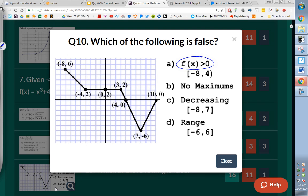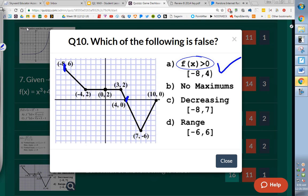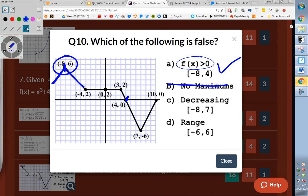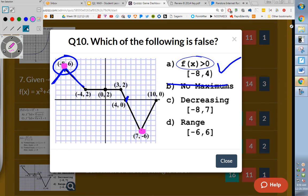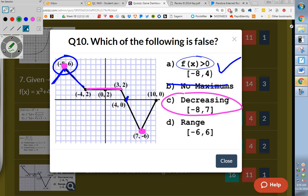F of x is greater than 0. What does it look like on the graph to be greater than 0? Above the axis. So let's see if that's true. From negative 8 to 4. From negative 8 to 4, we are above the x-axis. So that one's true. There's no maximums. Isn't this right here a maximum? No, because it doesn't go up and come back down. So we're not including that as a maximum. Is it decreasing from negative 8 to 7? So the question there is, from negative 8 right here all the way to 7, is it going down that whole time? No, because from negative 4 to 3, I'm constant. So that is the wrong answer. It is not decreasing. The range from negative 6 to 6. So c is the correct answer.